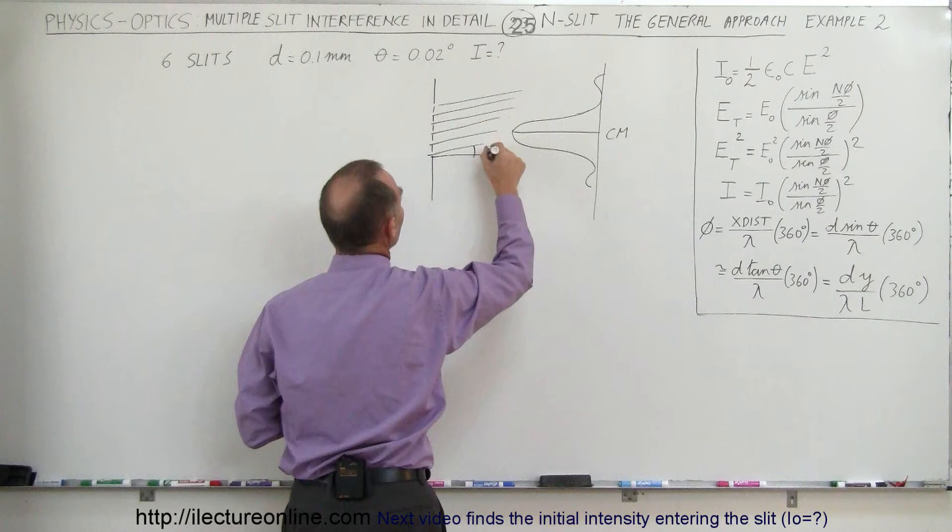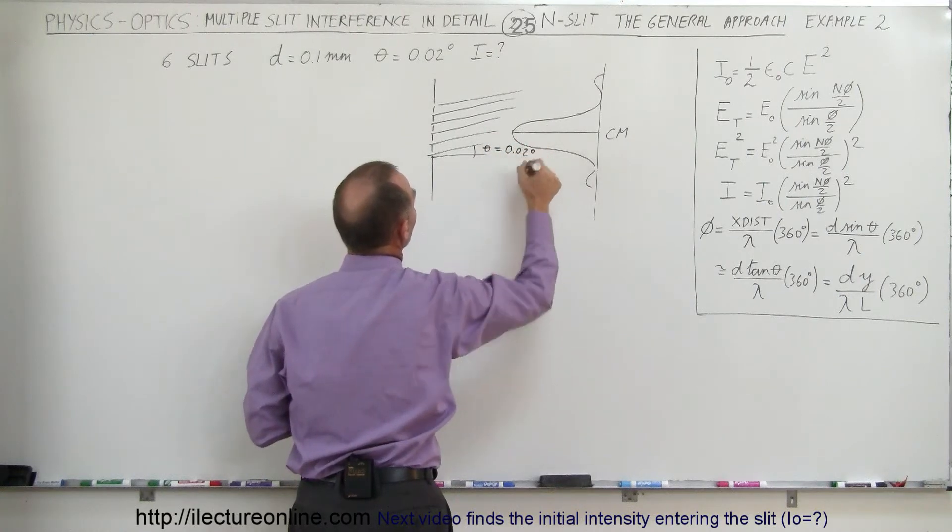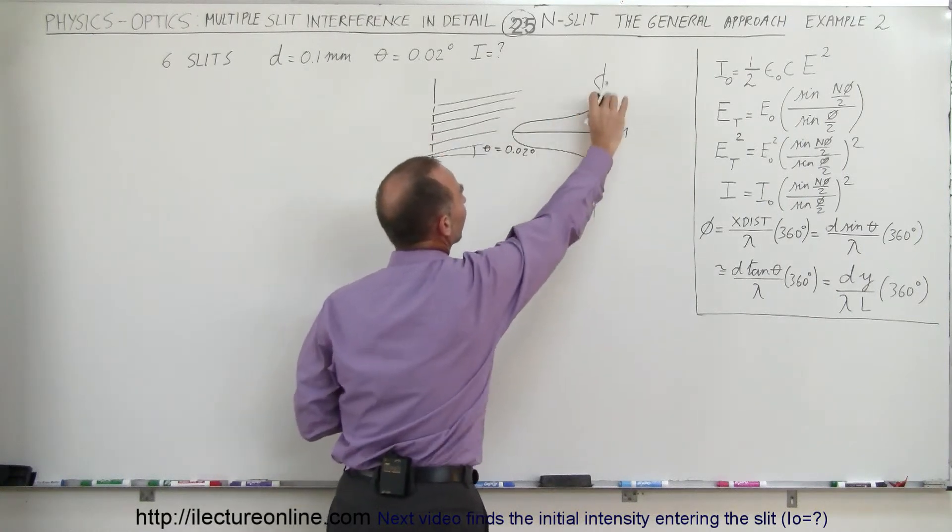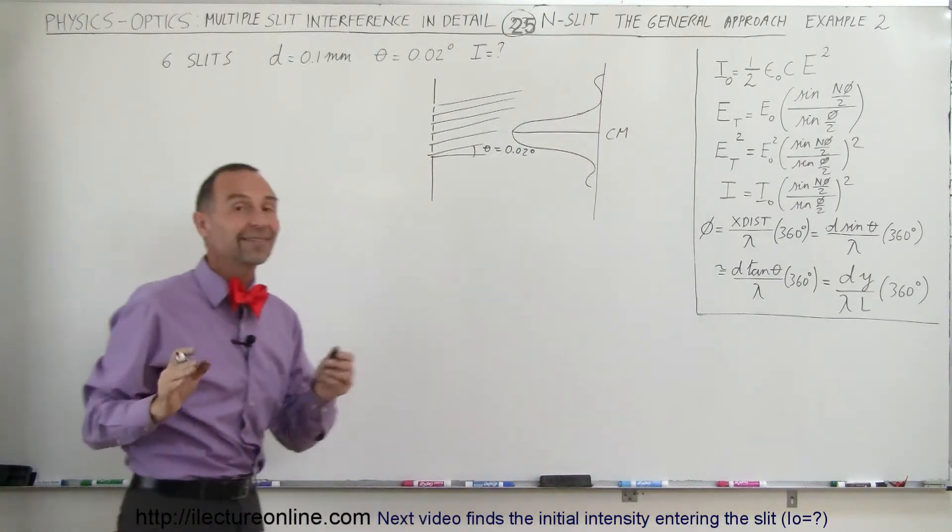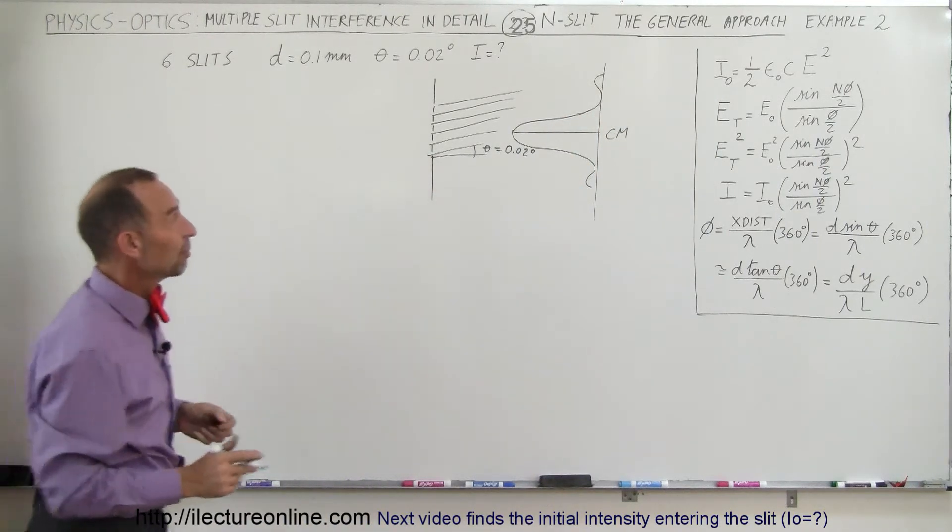So that would be theta equals 0.02 degrees. And we want to find out wherever that is on the screen, we want to find out what the intensity is of that pattern.